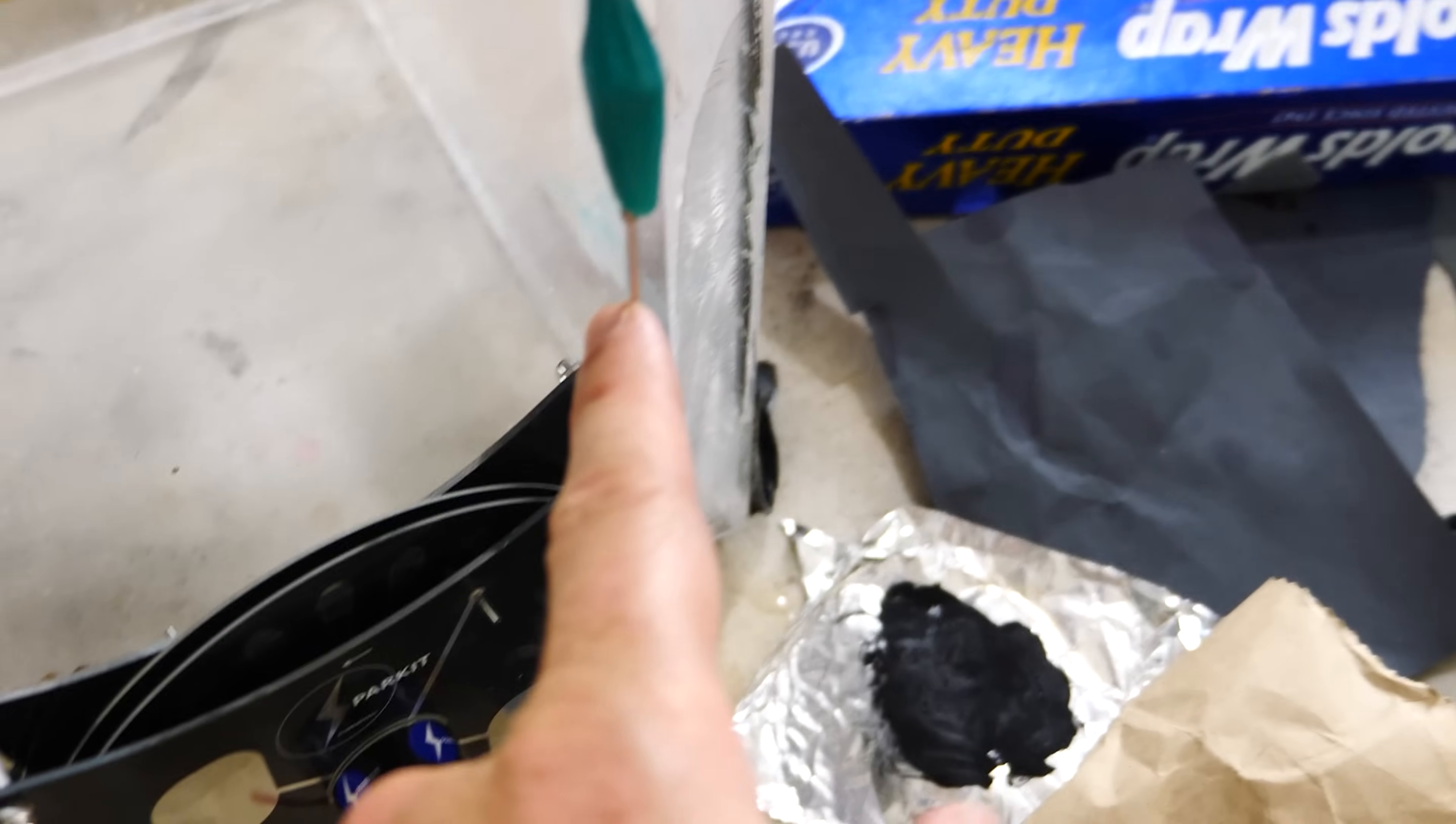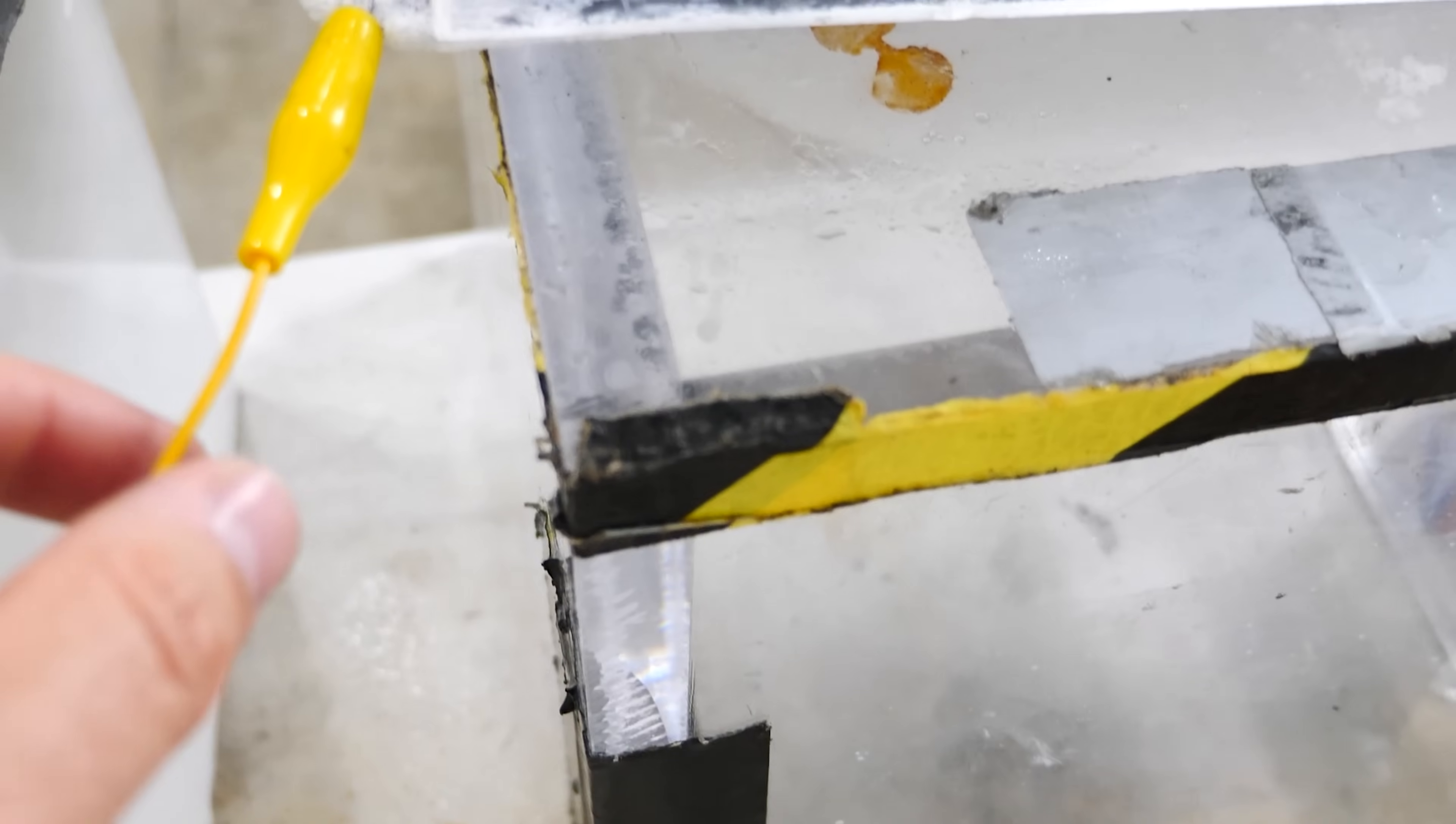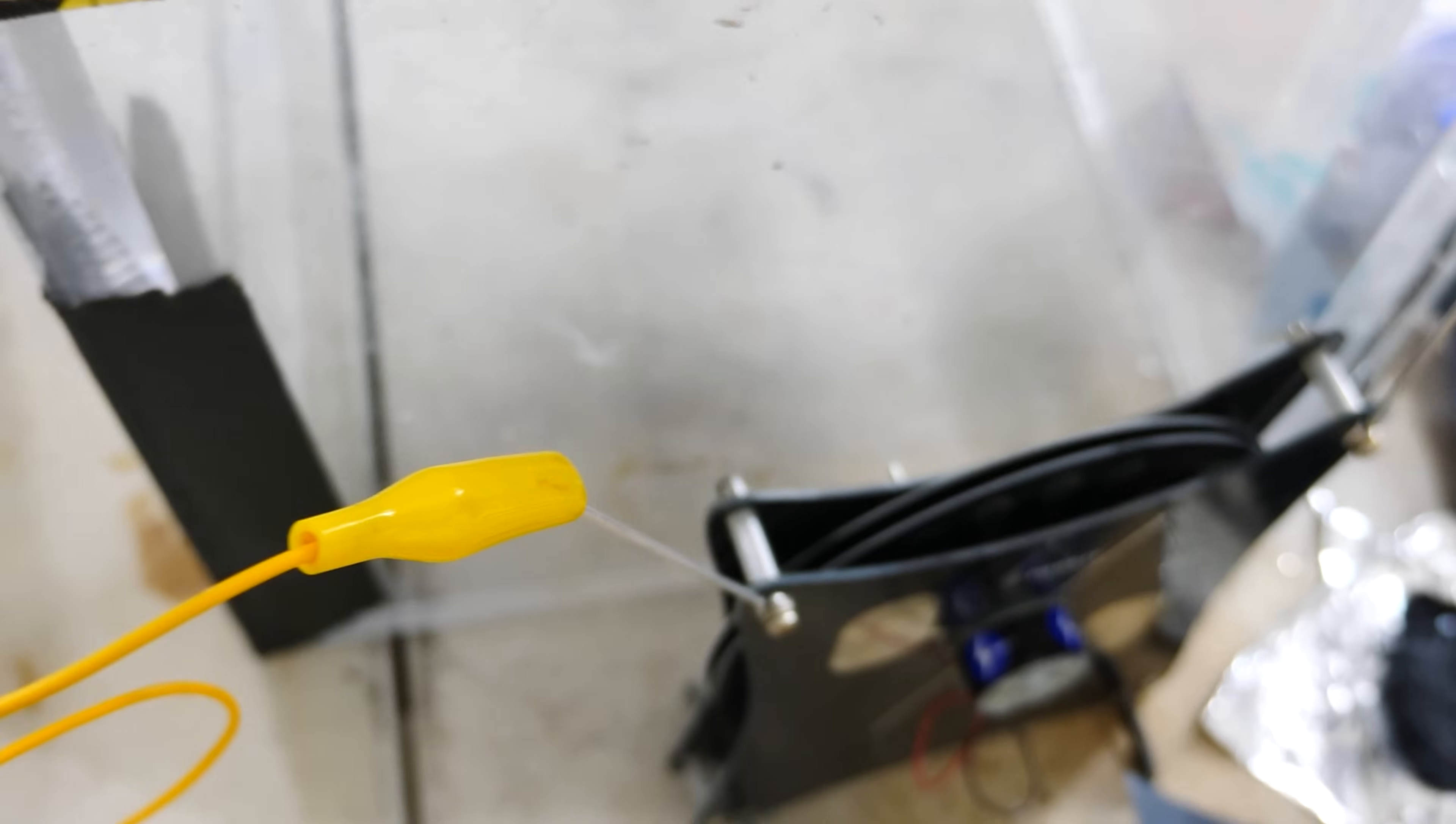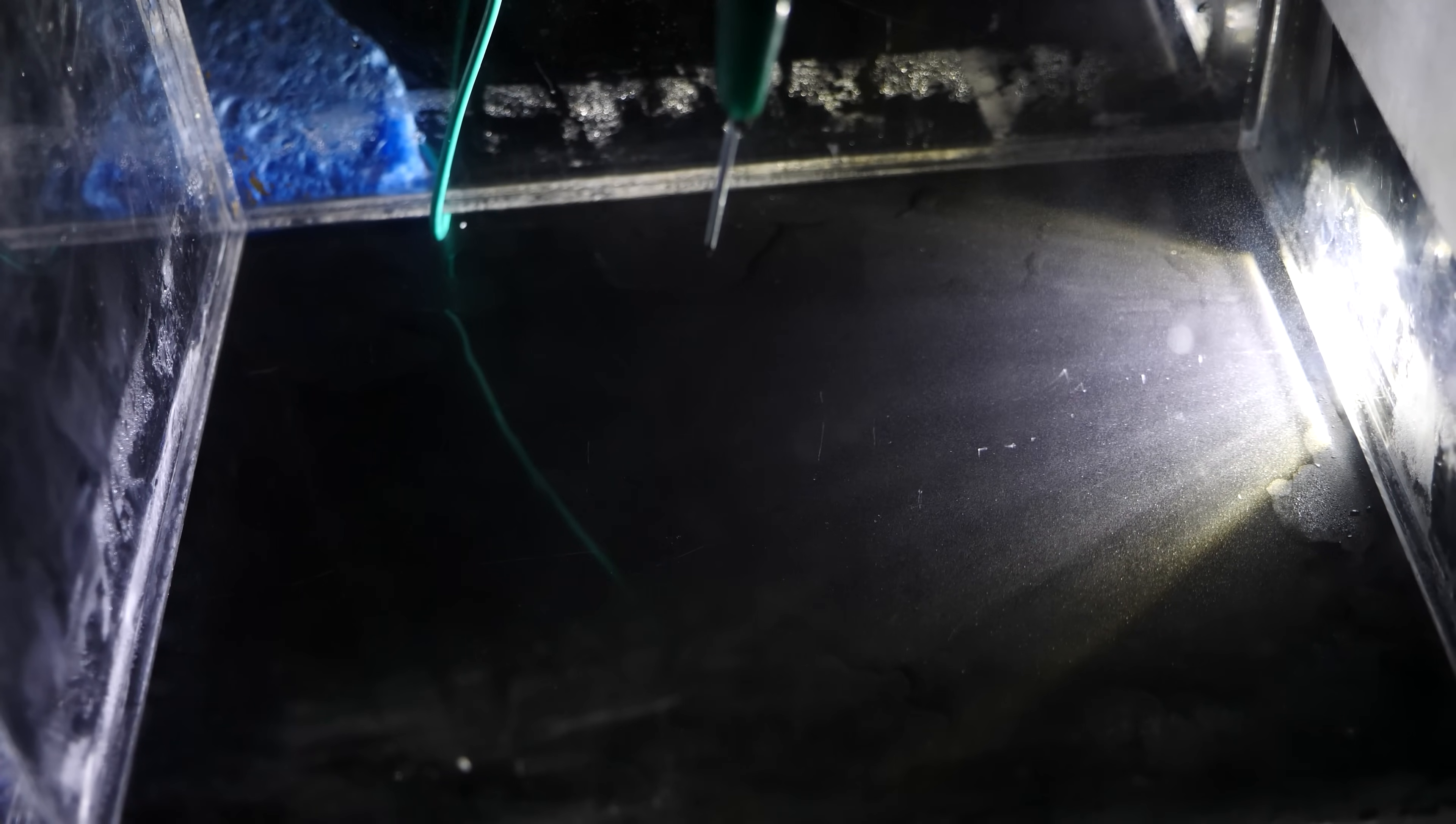I have a nail connected to one part of my Wimshurst machine and then the bottom plate connected to the other side. Turn it on.